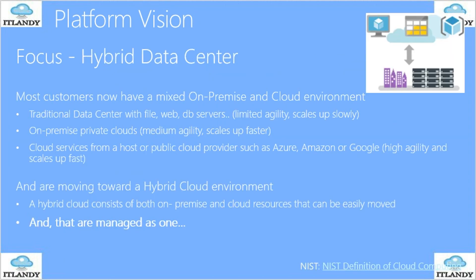The focus around hybrid data: most customers now have either a cloud environment or a hybrid environment. Traditional data centers with file, web services, and database servers limit agility to scale up or down, and refreshing them is costly and requires a proper project with budget. On-premise private cloud gives you more flexibility and agility to scale up faster, but not to the same degree as public clouds like Microsoft Azure, AWS, or Google, which provide high agility and faster scaling.